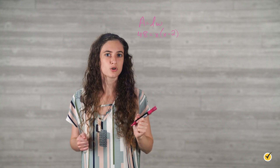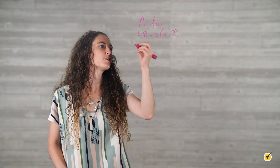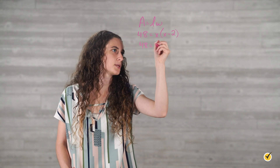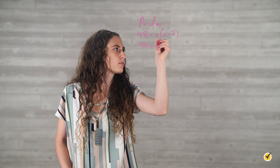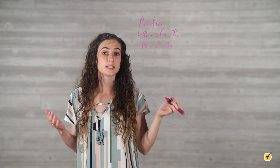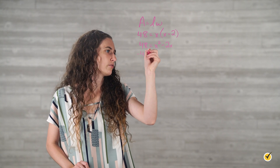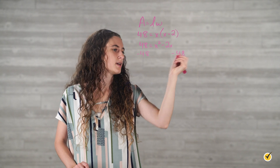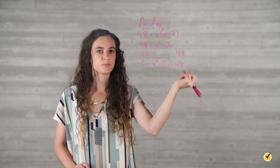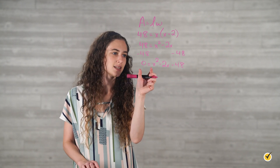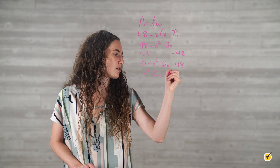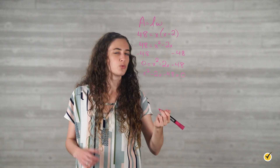Simplify the equation and write it in standard form. Distributing x into the parentheses gives x squared minus 2x. So we have 48 equals x squared minus 2x. Subtracting 48 from both sides gives 0 equals x squared minus 2x minus 48. Rewriting in proper standard form: x squared minus 2x minus 48 equals 0.